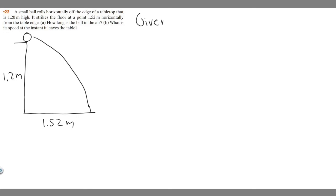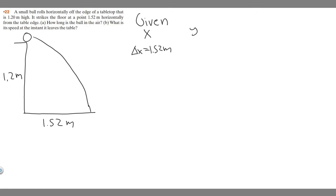Let's write down our givens. Since this is two-dimensional, we have the x and y directions. In the x direction, the change in x position is 1.52 meters — so delta x equals 1.52 meters. In the y direction, we start at 1.2 meters and end at 0, so we're changing negative 1.2 meters. That's just final y minus initial y: 0 minus 1.2 equals minus 1.2.